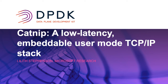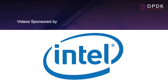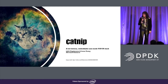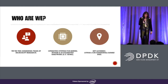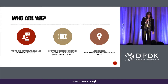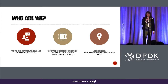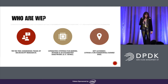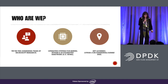Hello. My name is Lily, and I'm a woman. I'm here to talk about CatNap, which is a low latency embeddable user mode TCP/IP stack that we developed in Rust at Microsoft Research. We're the DemiKernel team. Our goal is to create an operating system for kernel bypass and accelerated network hardware, or accelerated hardware in general. The code is MIT licensed and available open source on GitHub.